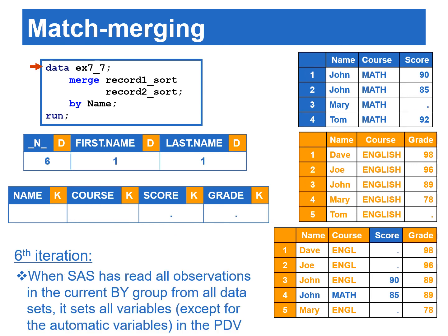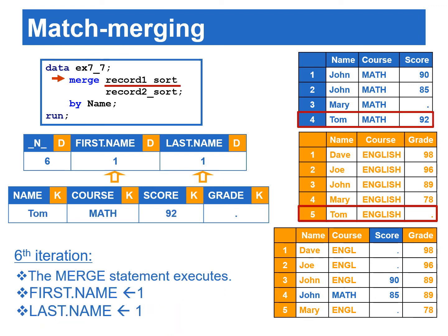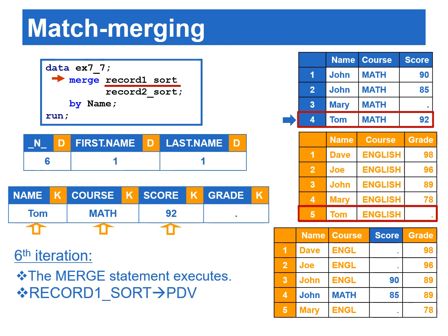At the beginning of the sixth iteration, SAS has read all observations in the current by group from all data sets, and sets all variables in the PDV to missing except for automatic variables. The last by group is when name equals Tom — there is one observation each from record one sort and record two sort. When the merge statement executes, first.name and last.name are set to one. SAS copies the last observation where name equals Tom from record one sort to the PDV, then copies the last observation from record two sort to the PDV as well. This completes the execution phase of the match merging.